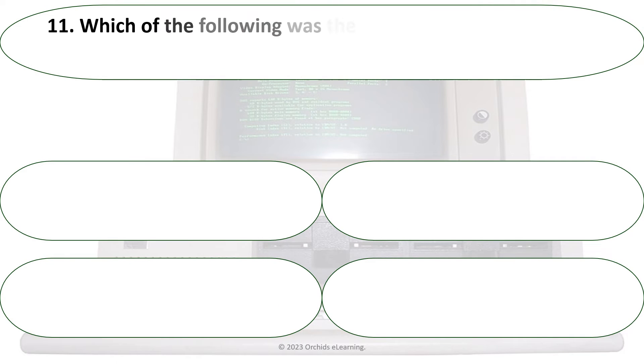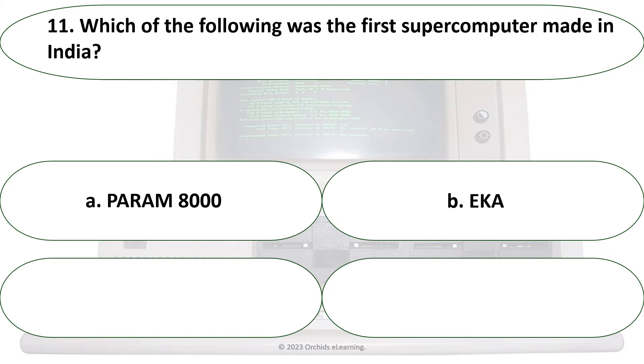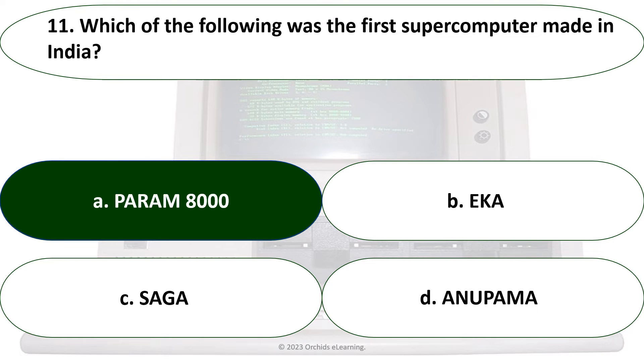Which of the following was the first supercomputer made in India? A. PARAM 8000